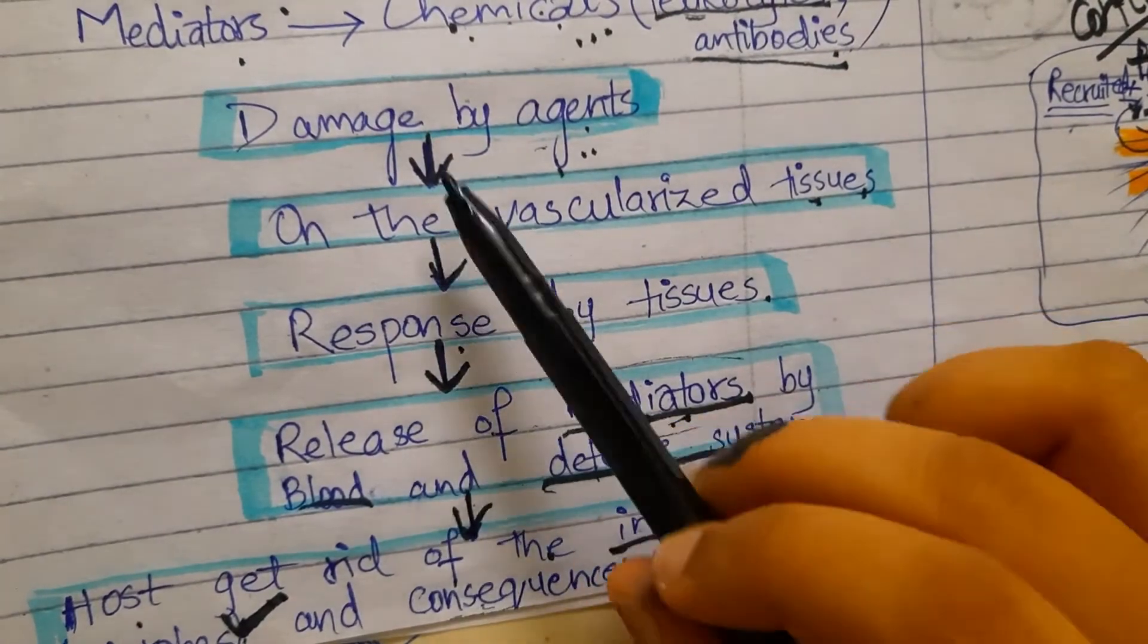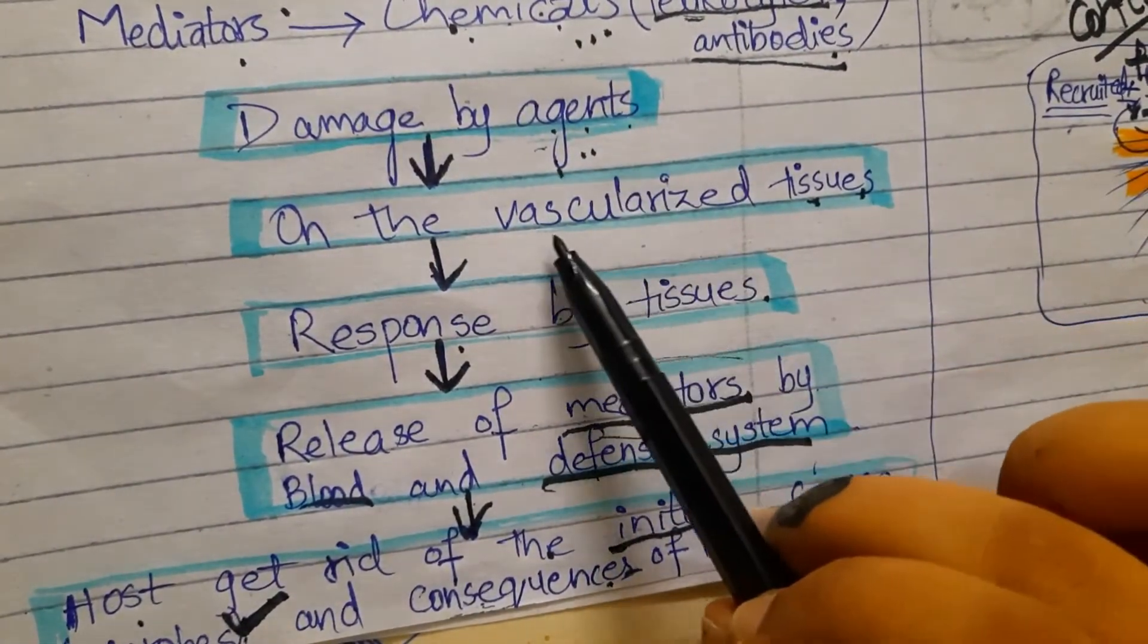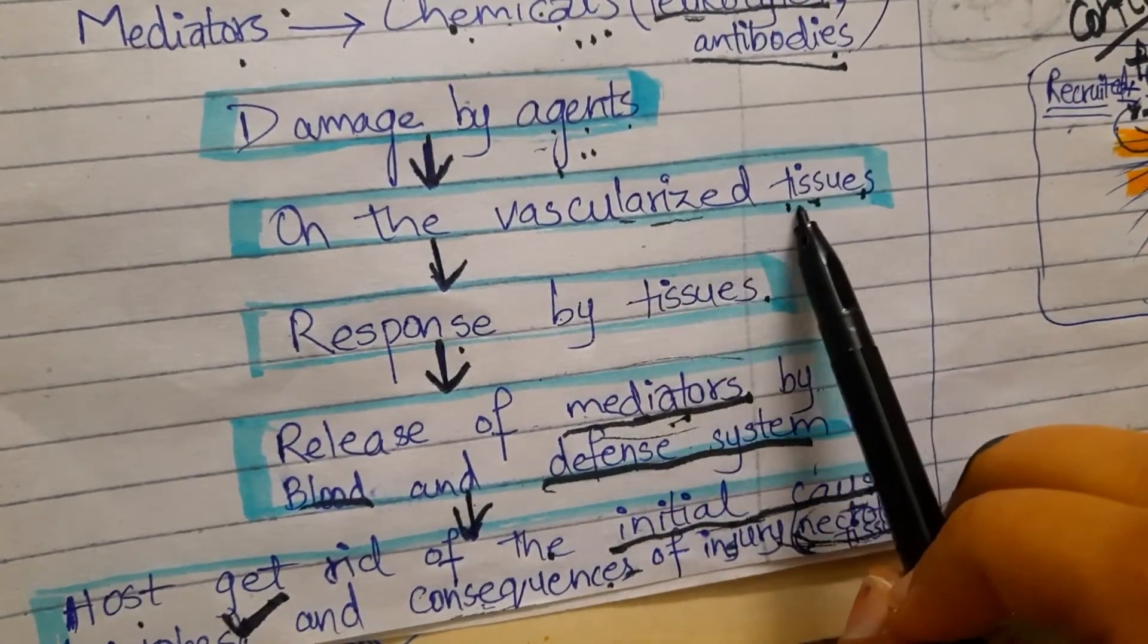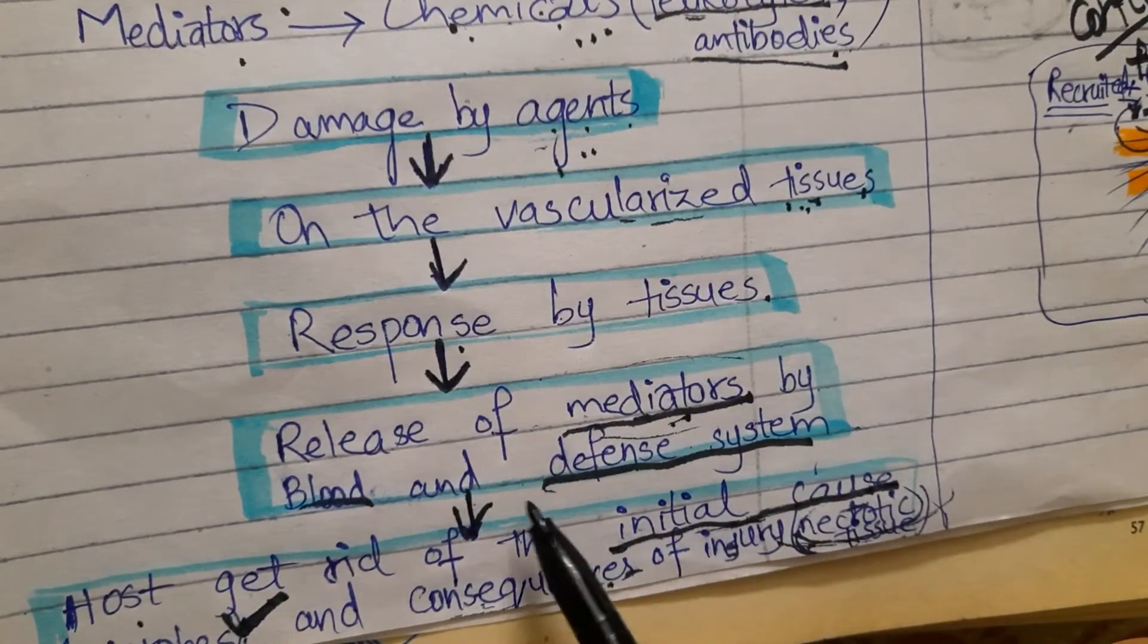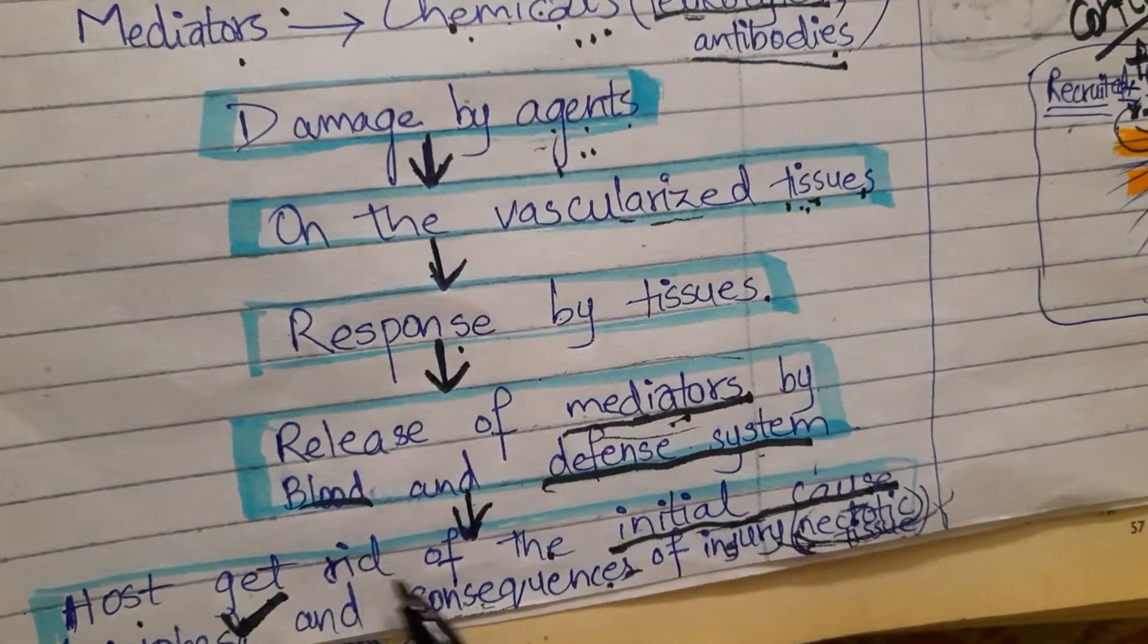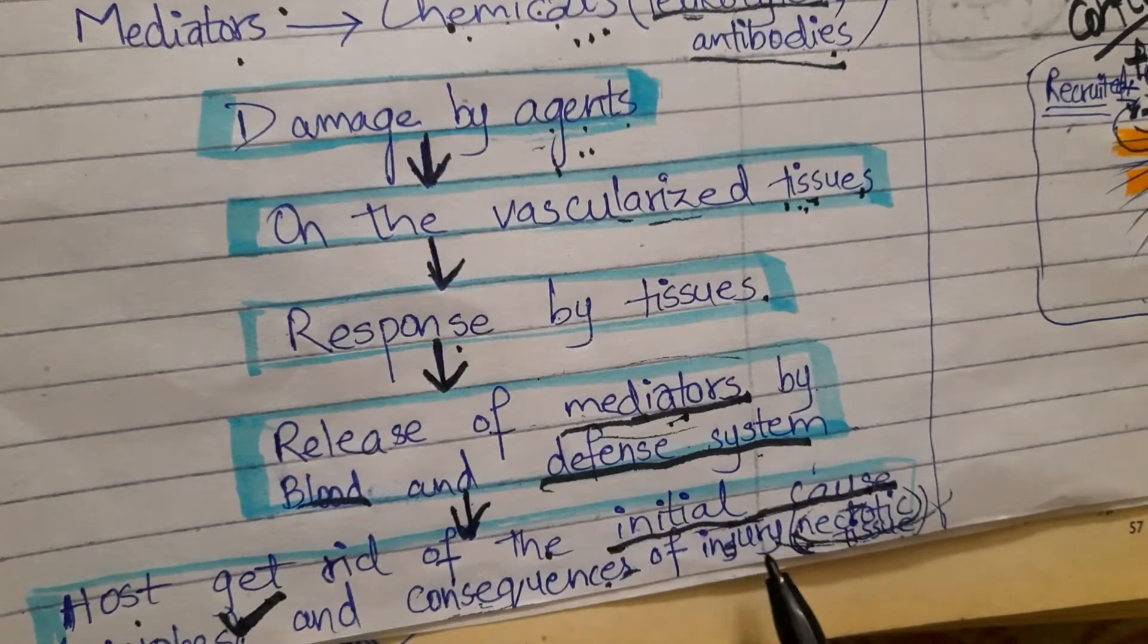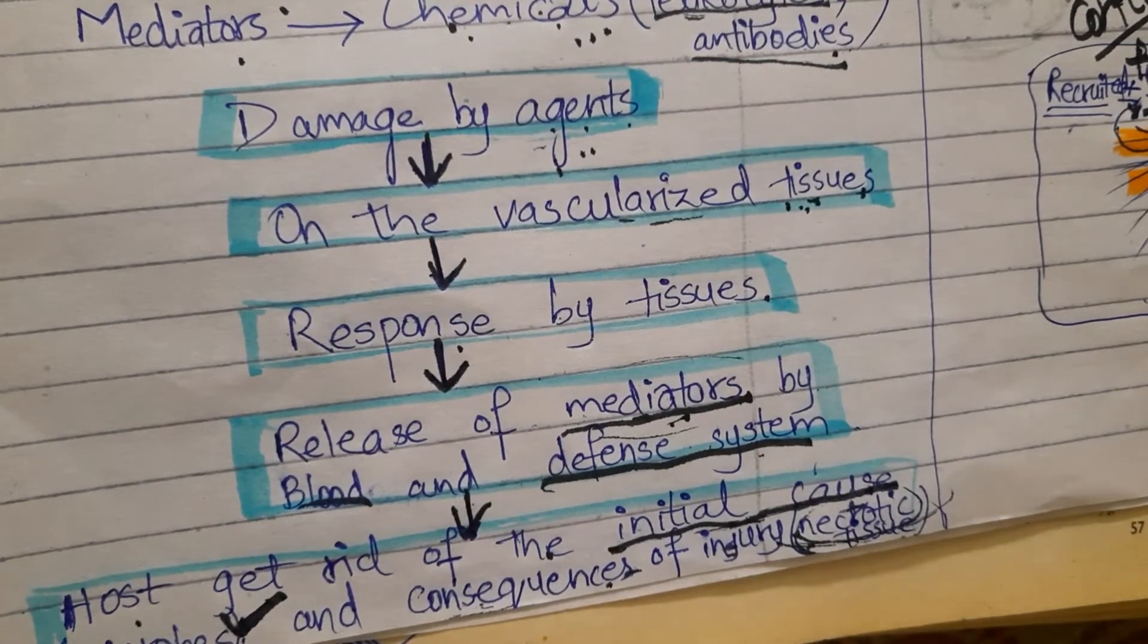In these steps, damage occurs by the external agents or microbes on the vascularized tissue, meaning tissue containing many blood vessels. They respond by releasing mediators by the blood and the defense system, and the host gets rid of the initial cause as well as the consequences of the injury, meaning the necrotic tissue.